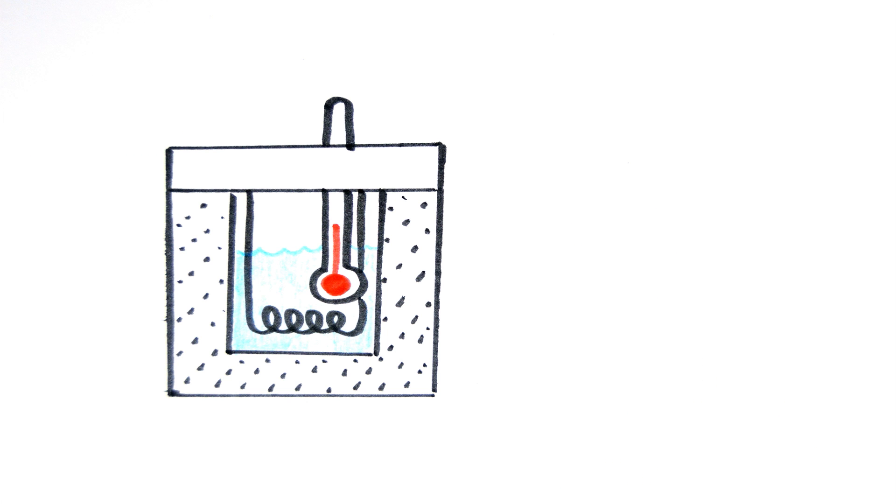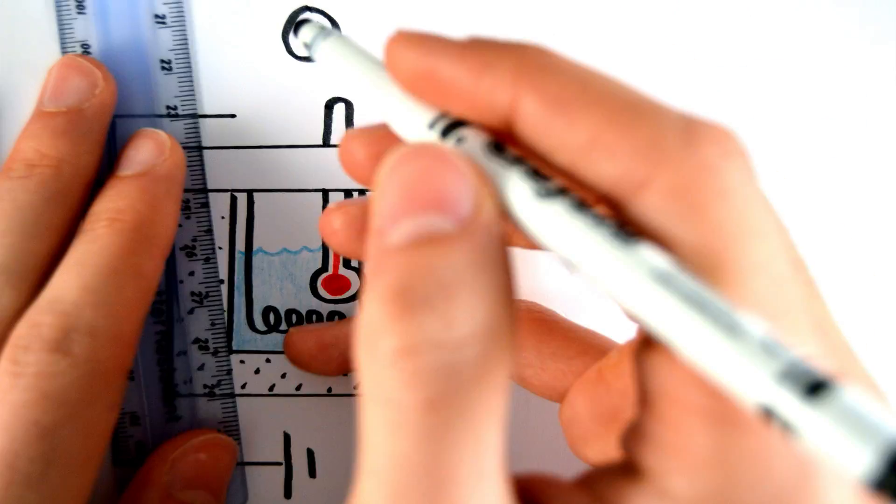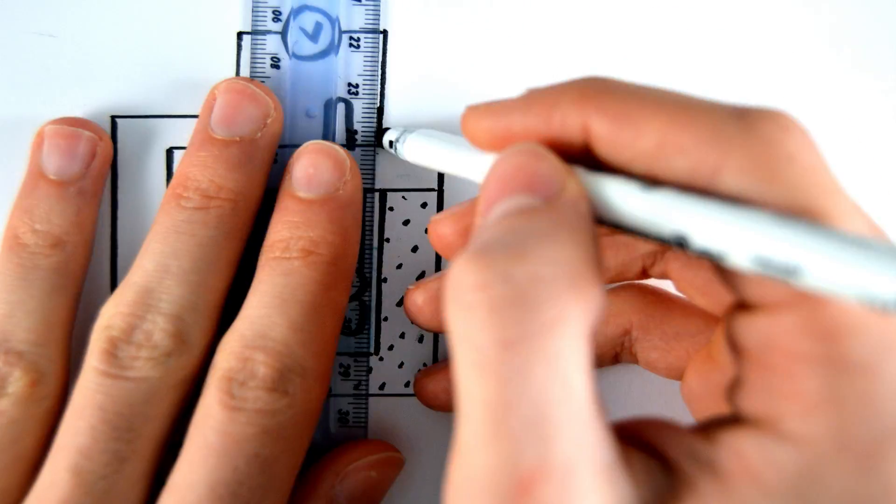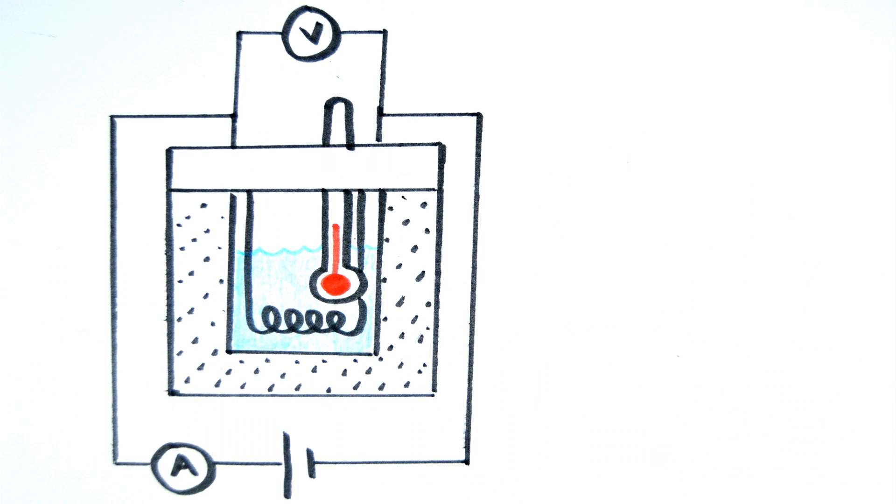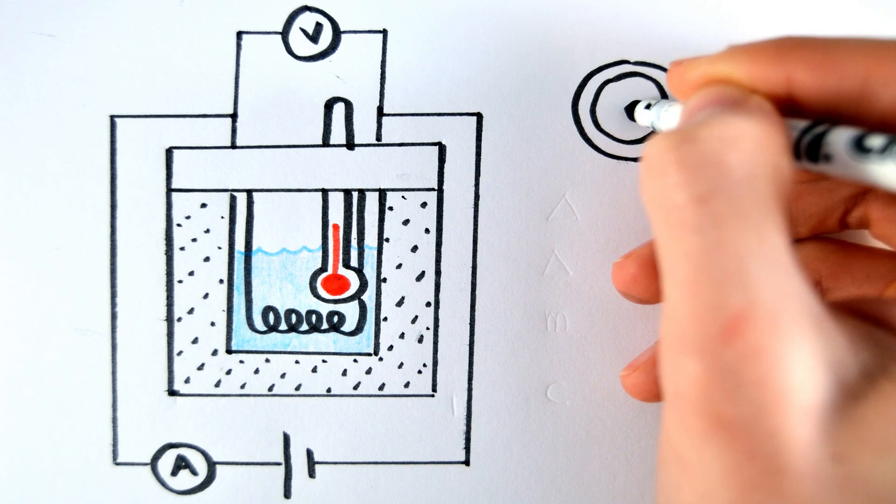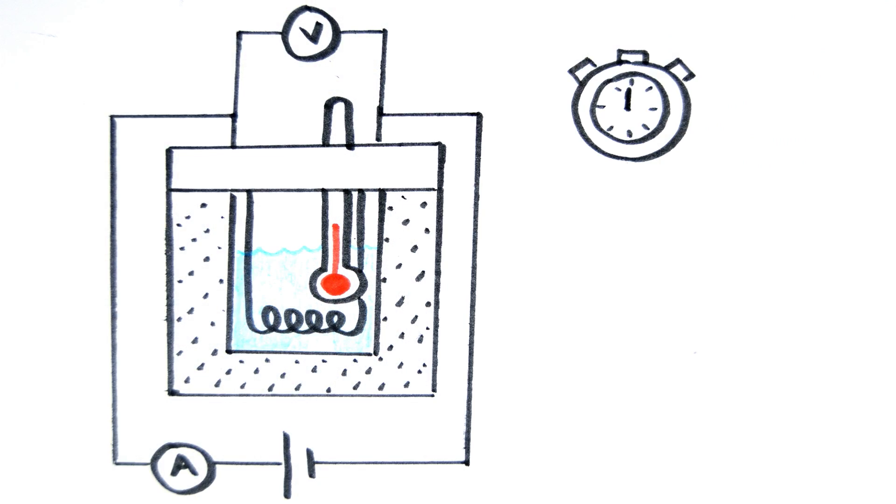The calorimeter will have a heating element inside it, connected to a power supply with an ammeter and a voltmeter in the circuit. A thermometer will also be placed in the calorimeter to measure the change in temperature. Finally, a stopwatch should be used to measure the time it takes to go from its initial temperature to its final temperature.